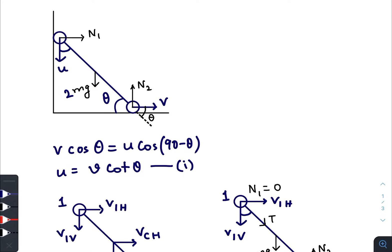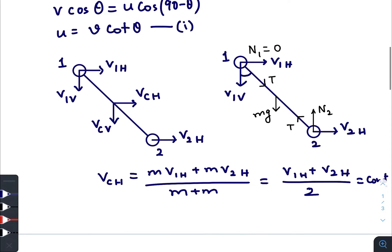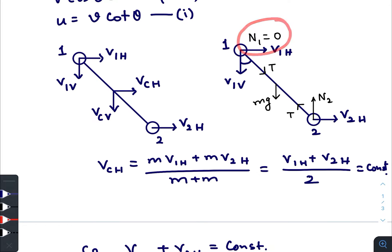Initially, N₁ was increasing the velocity of the center of mass in the horizontal direction. But since the upper ball was in contact with the vertical wall, its horizontal velocity was not increasing. So the total rise in horizontal velocity was contributed by the lower mass only. The velocity of the lower mass was increasing, reaching a maximum value until the upper ball loses contact.